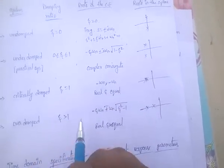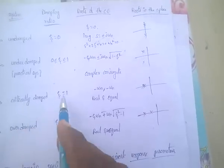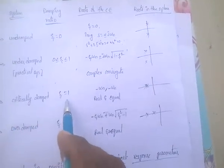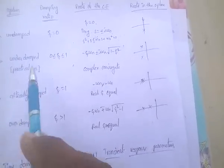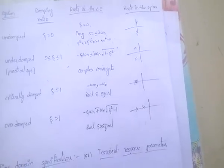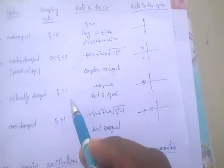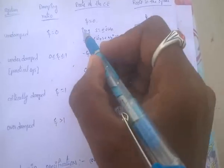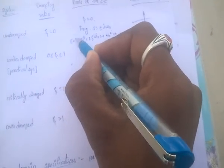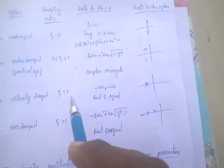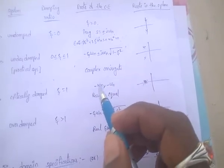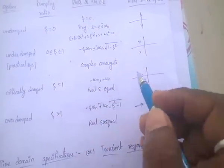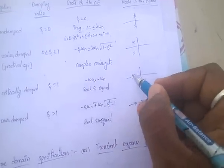For the critically damped system, ζ = 1. If you substitute ζ = 1 into the characteristic equation, the roots are −ωn, −ωn — that is, real and equal.